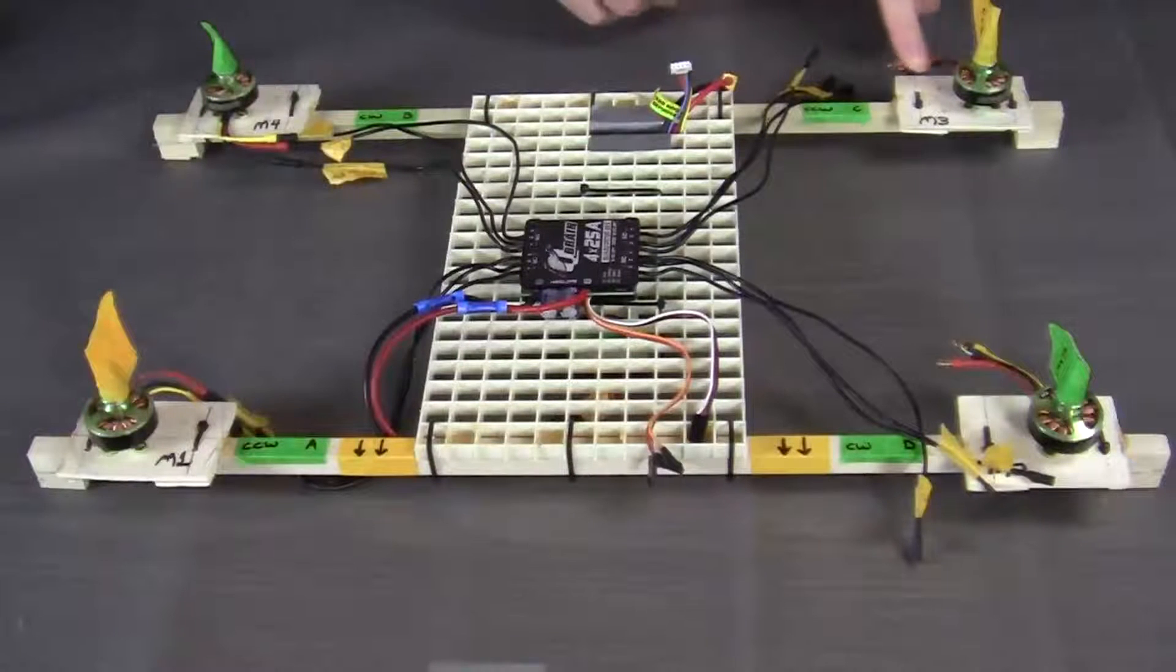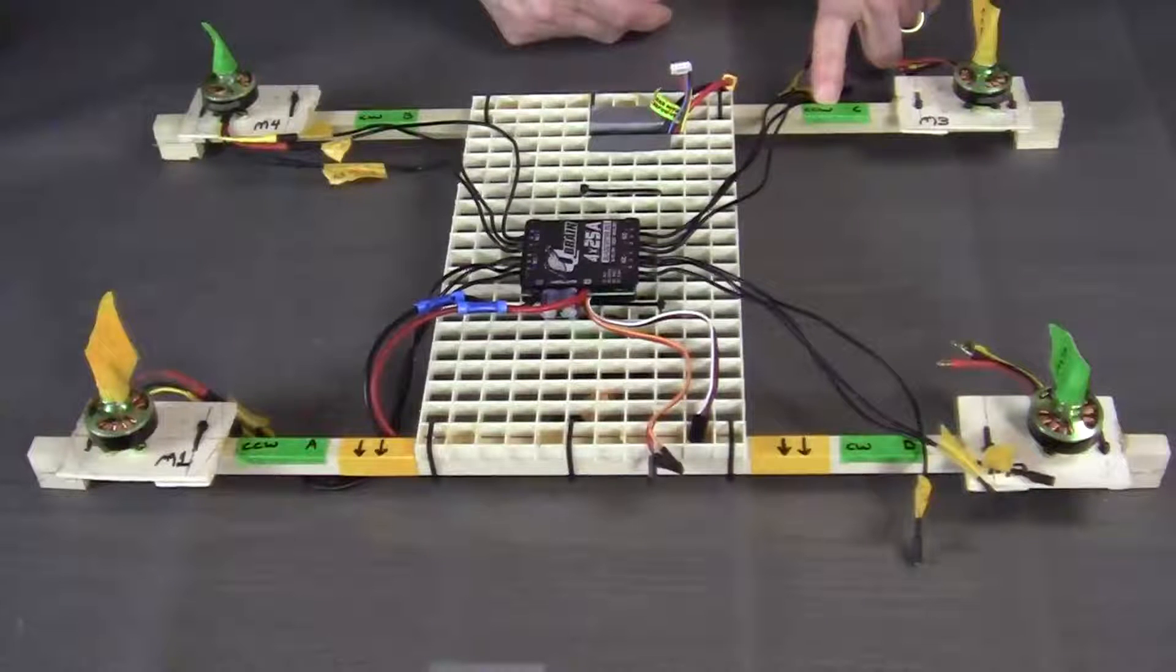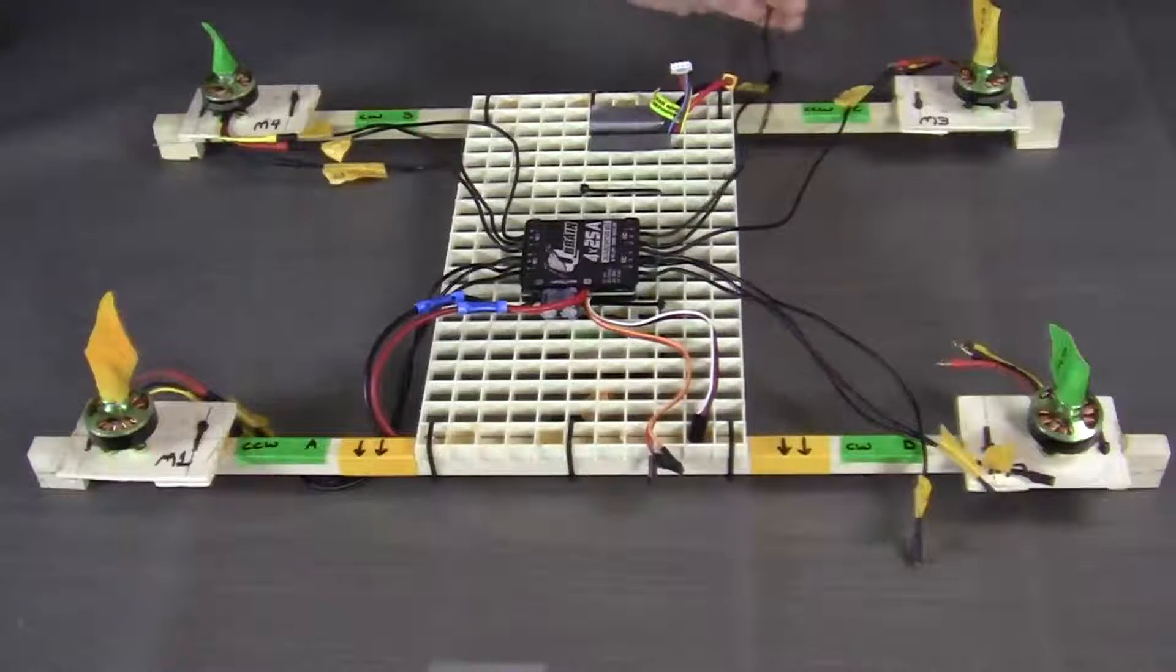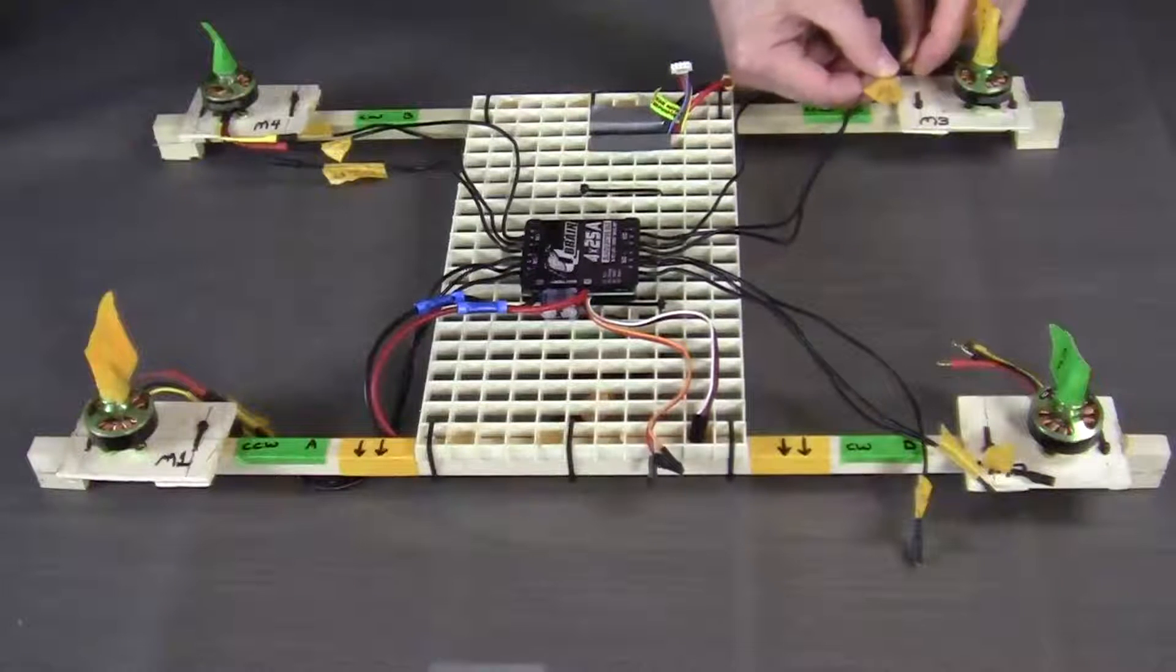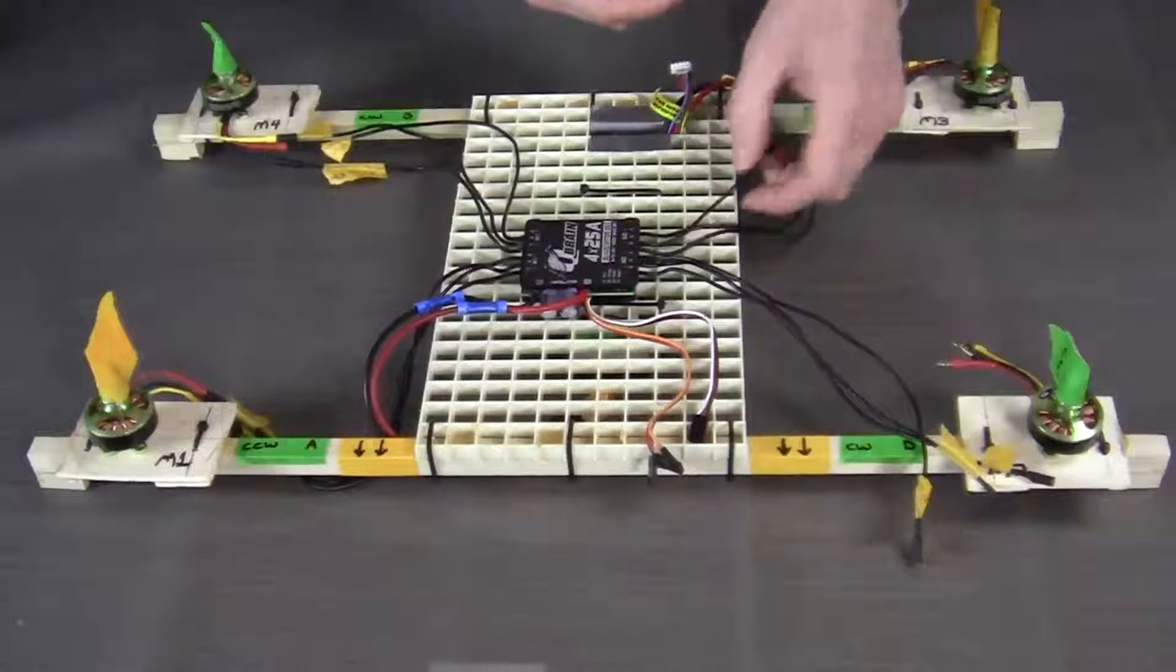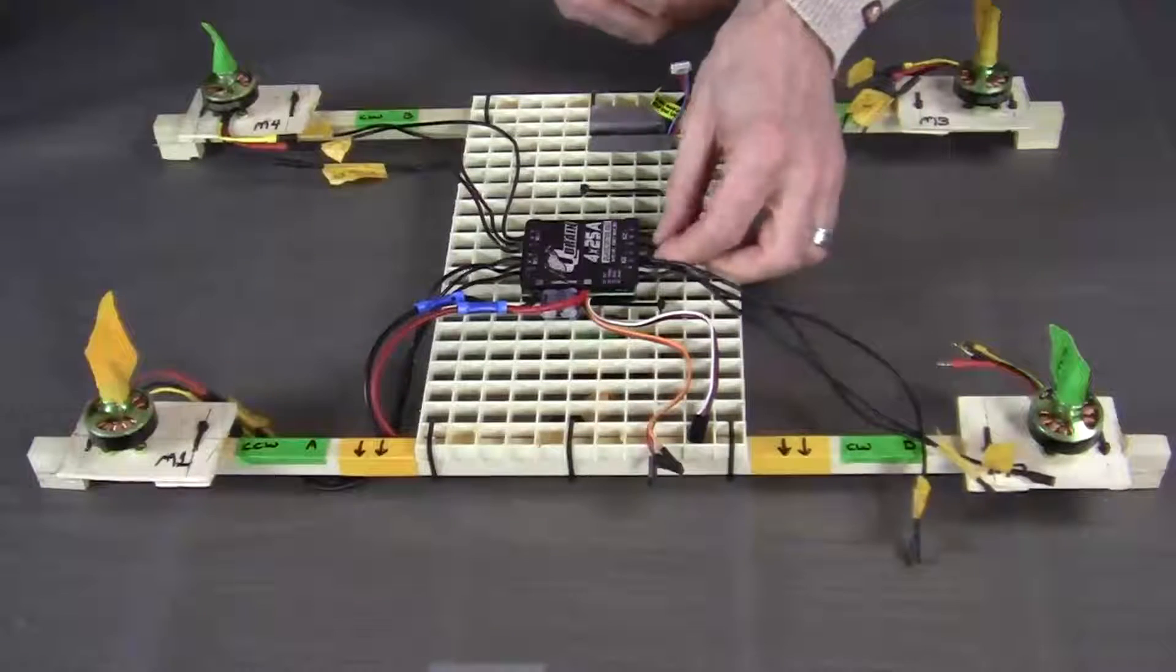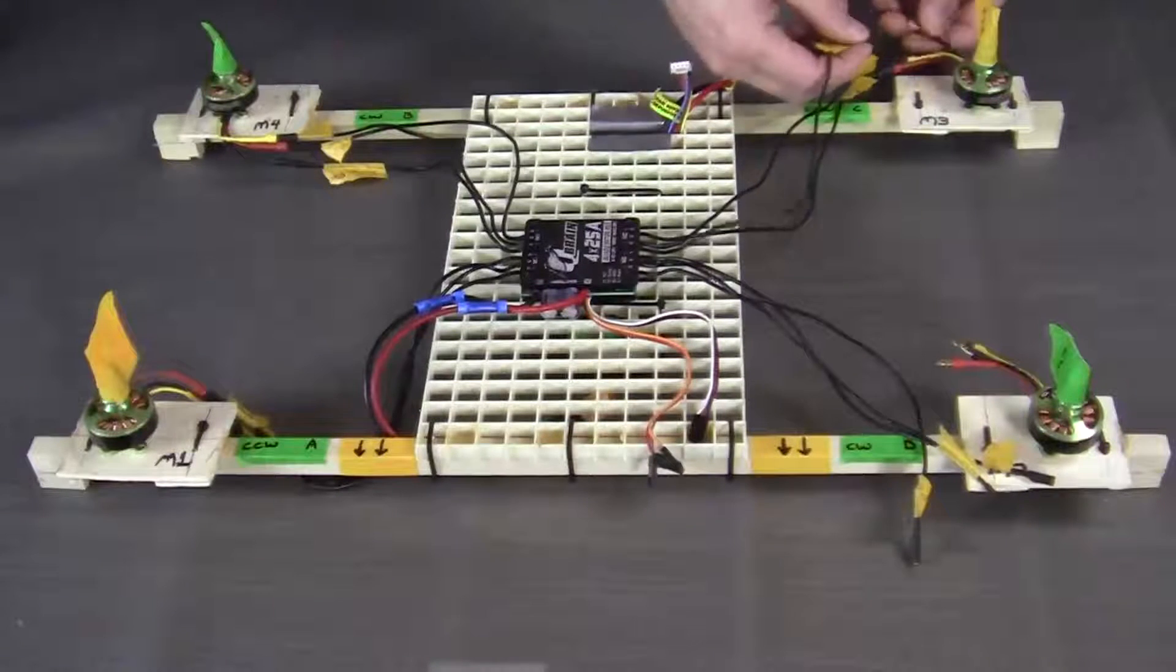Now over here the M3 motor we want to rotate in a counter clockwise rotation. So we're going to take the M3 A wire from the ESC and we're going to connect it to the red wire on the M3 motor. We are going to take the B wire here and connect it to the yellow wire. And we're going to take the C wire and connect it to the black wire.